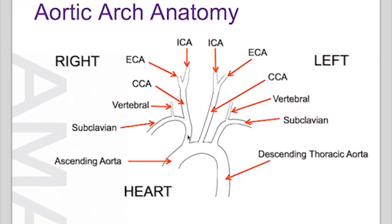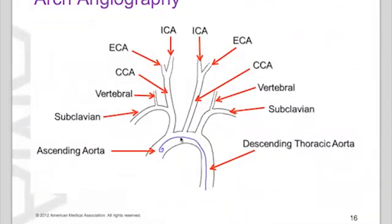Even though it seems like a straight line, they really did enter a second order branch. And now this further splits — as you've probably figured out, this is a third order branch. Your CPT coding will go based on whatever the furthest distance is — that's normally the code you'll be picking. That is the difference between selective versus non-selective. They tend to go to third order and stop; beyond that, they call it supra-selective.